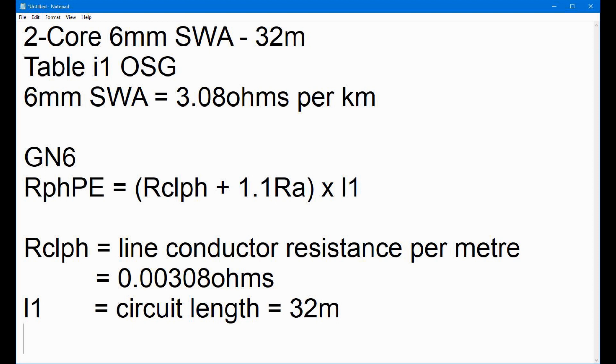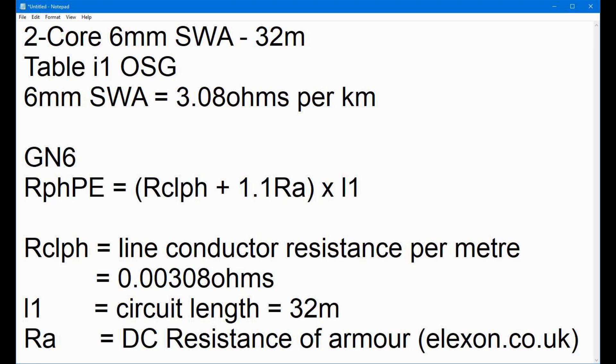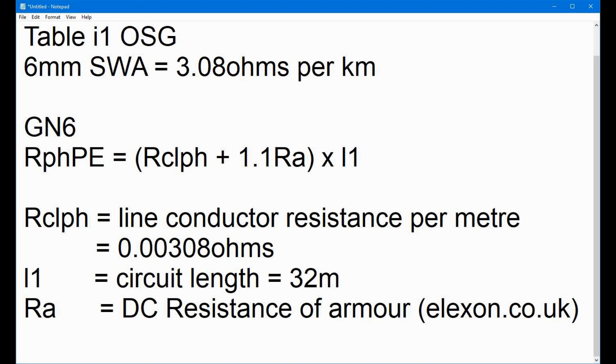Ra is the DC resistance of the armour. Now, you won't find that in Guidance Note 6 or any BS 7671 publication. But, where you can find it, if you search for it on the internet though. There are several places you can find it. In my particular case, I'll just write this down. So, we know Ra is going to be the DC resistance of the armour. And, I found the value for what this particular cable is from a website called elexon.co.uk. And, it's on that website. But, if you search Google for resistance of armour or something along those lines, this is what you come up with. There are other websites. This is the one I found.